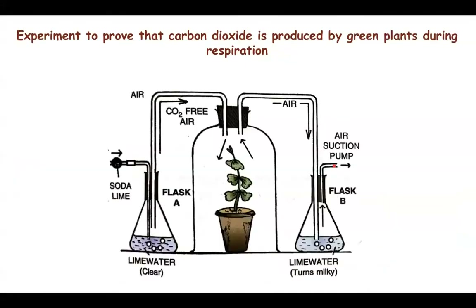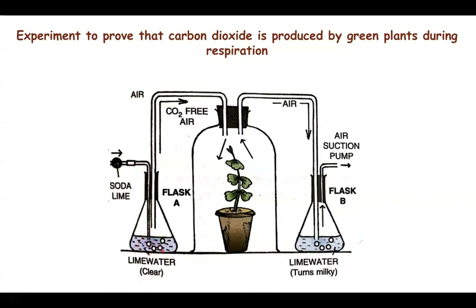We may also use a similar experimental setup to prove that green plants also respire. Here we have a small device filled with soda lime — a mixture of sodium hydroxide and calcium oxide — which is an absorbent of carbon dioxide. The incoming air passes through soda lime so that carbon dioxide-free air enters the lime water in flask A, which will not turn milky. This carbon dioxide-free air then passes through a bent tube into a bell jar containing a green plant.